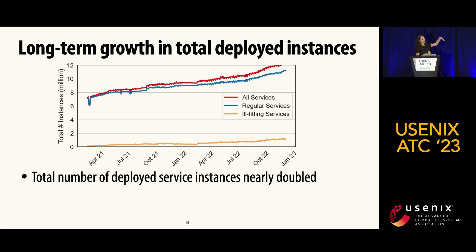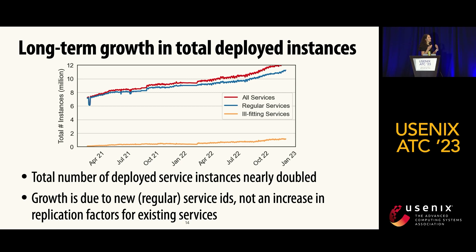When we split this by regular and inference platform services, most instances are associated with regular services, not the inference platform. We investigated why and found this is due to new regular service IDs, not an increase in replication factors for existing services — new pieces of functionality are being added to Meta rather than existing pieces growing in scale.